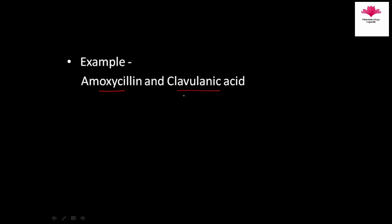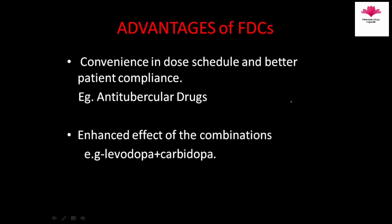Why do we use fixed dose combinations? For example, amoxicillin and clavulanic acid are given in a fixed dose combination. Amoxicillin is an antibiotic of the penicillin group, and the problem with amoxicillin is that it is destroyed by the bacterial enzyme beta-lactamase. When combined with clavulanic acid, clavulanic acid saves it from degradation by beta-lactamases.